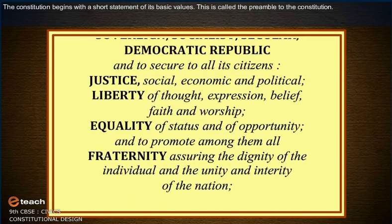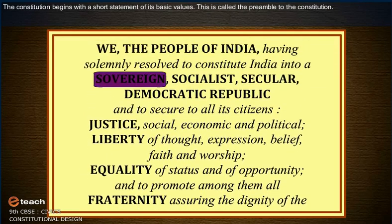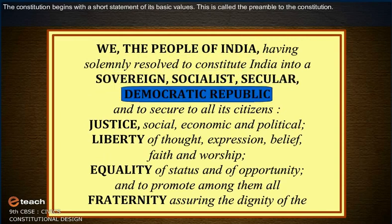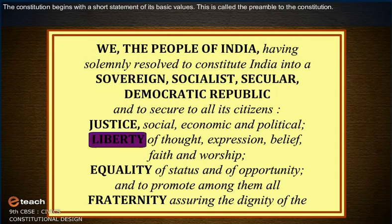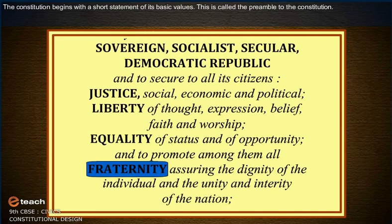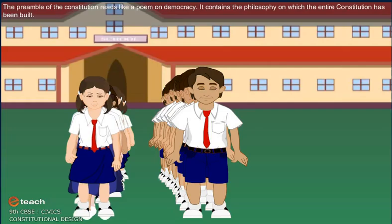The Constitution begins with a short statement of its basic values. This is called the Preamble to the Constitution. The Preamble reads like a poem on democracy. It contains the philosophy on which the entire Constitution has been built.